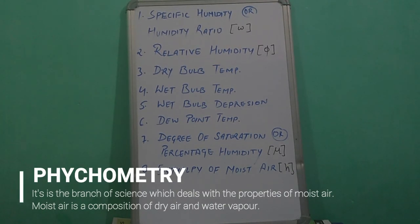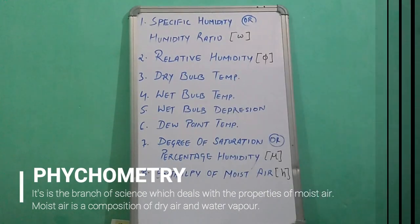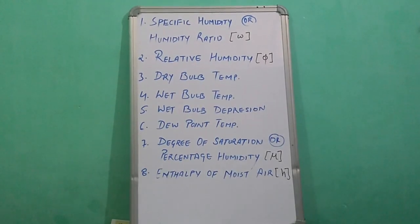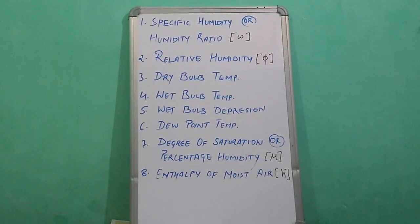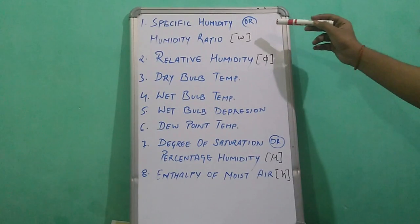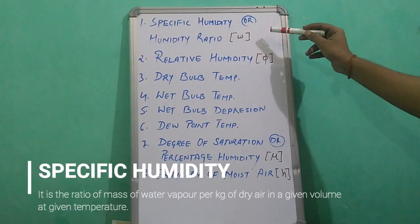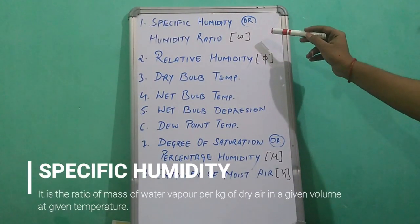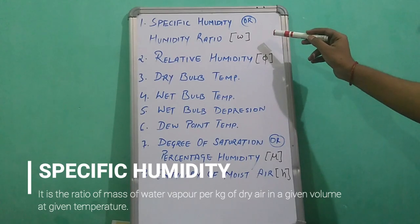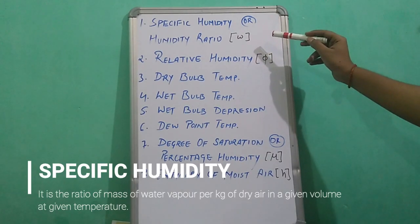Before starting the psychrometric chart, let me quickly define the following terms. Specific humidity, or humidity ratio, is defined as the ratio of mass of water vapor per kg of dry air in a given volume at a given temperature.